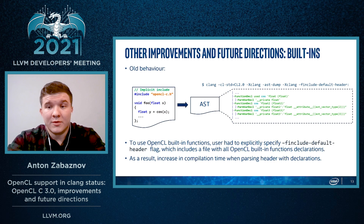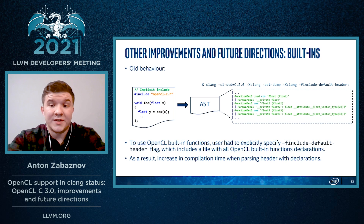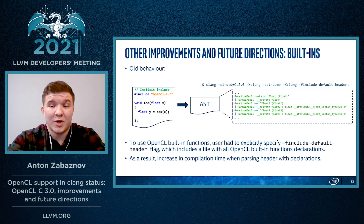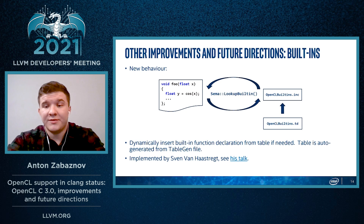Huge work has also been done for processing OpenCL built-ins. Originally, all the OpenCL built-in functions were declared in an internal Clang header. Later, a user had to explicitly specify a special option to use built-ins in a kernel source. This increased compilation time because the front-end had to always parse this internal header containing a huge amount of declared functions. A new approach was introduced where the key idea is to perform dynamic lookup to resolve names by necessity from a table auto-generated from TableGen, and this approach was enabled by default with a special option for falling back to the old behavior.